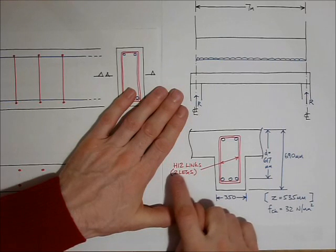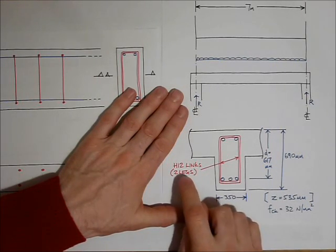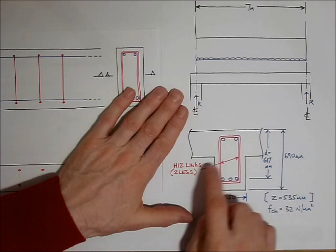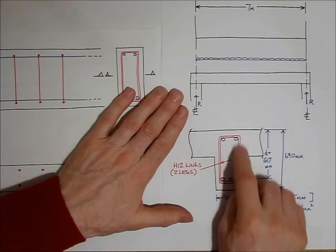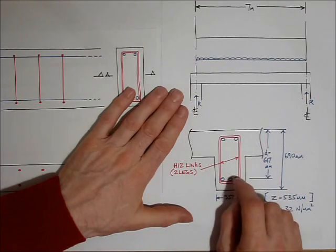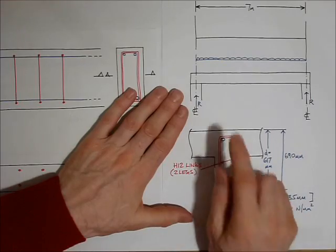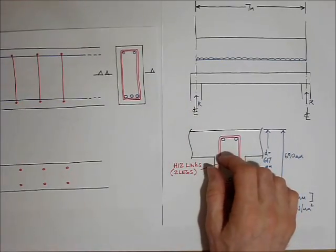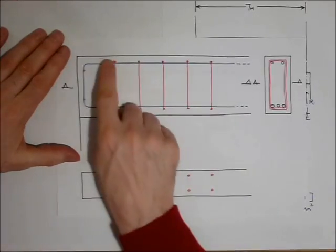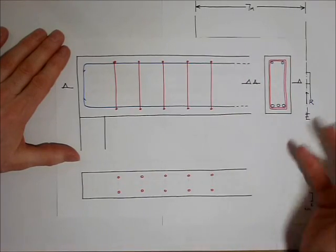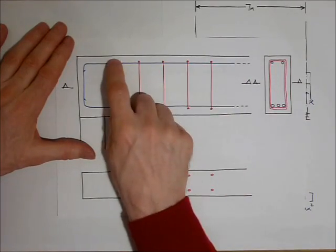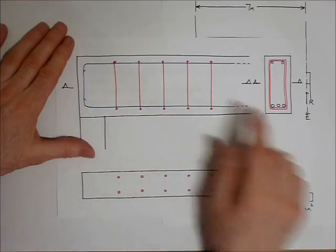What is the shear reinforcement? I'm assuming that we're going to use H12, that's 12mm diameter high yield bars and two legs. That means that each of these bars has been bent into a rectangular shape and the bars are arranged along the length of the beam. In some ways you could say that these act as staples or they tie the top part of the beam to the bottom part of the beam.